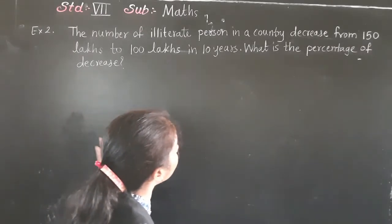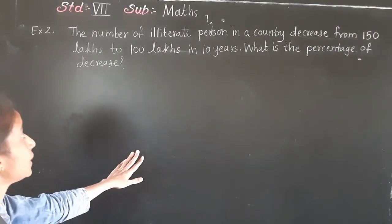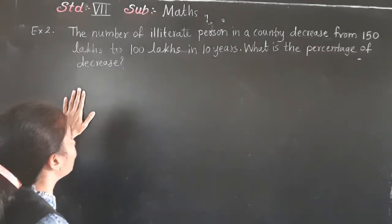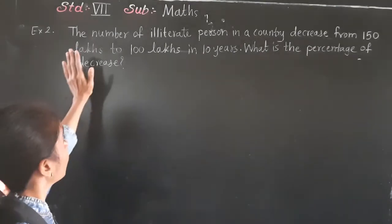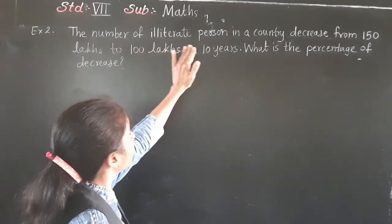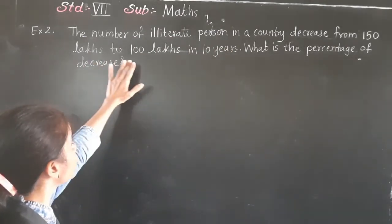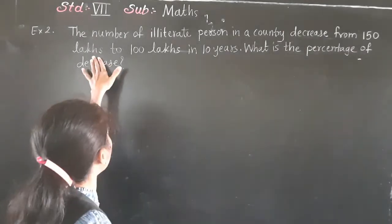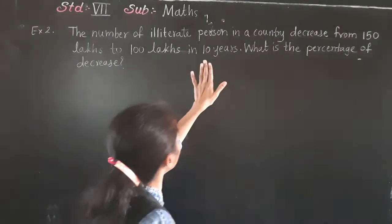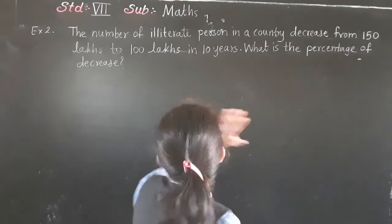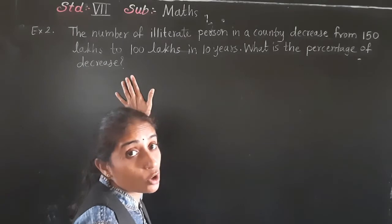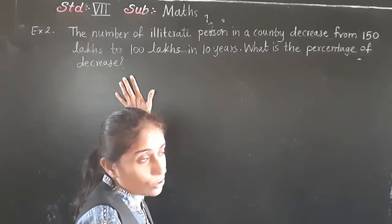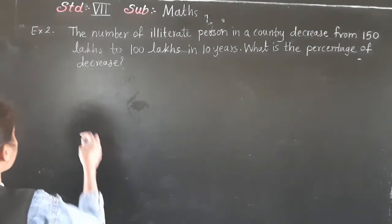Let's see one more example. The number of illiterate persons in a country decreased from 150 lakhs to 100 lakhs. What is the percentage of decrease? The number decreased by 50 lakhs. We need to write that back as a percentage, so how much percent did it decrease?